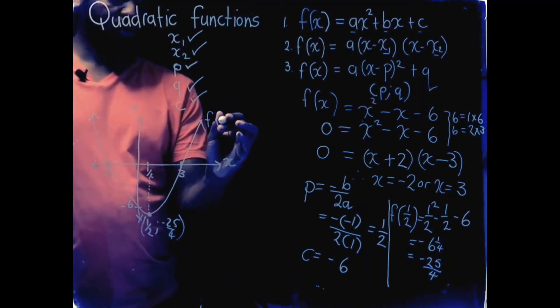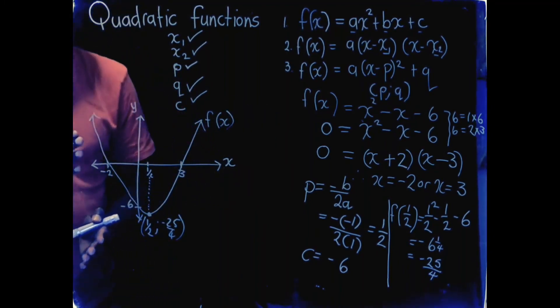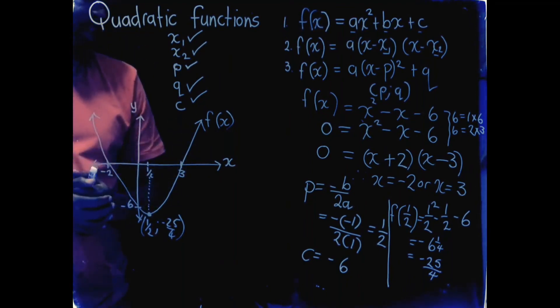There you go. There's my f of x. That is how you can plot a quadratic function by determining these five values and just plotting it like that.